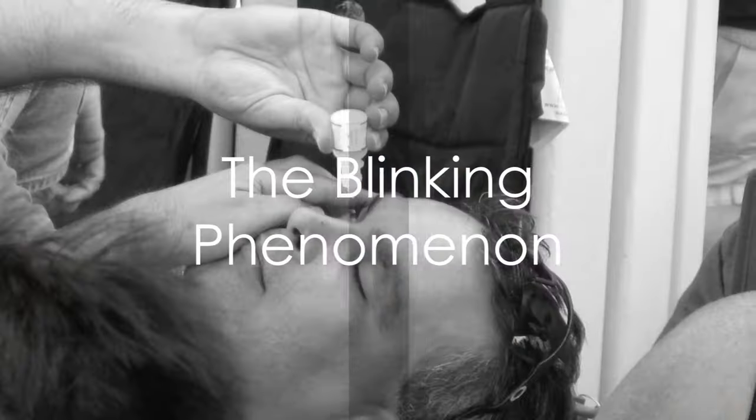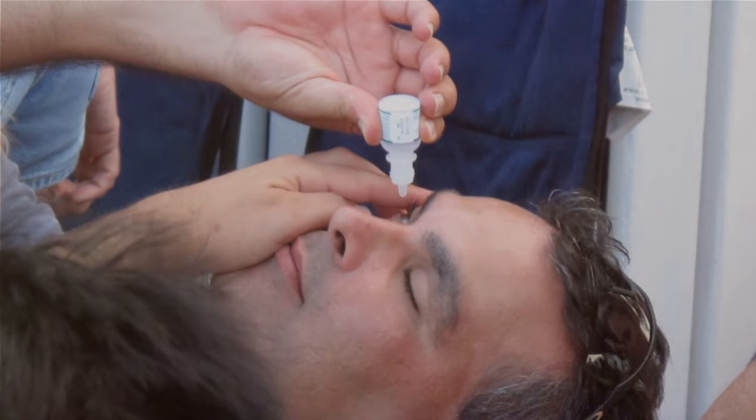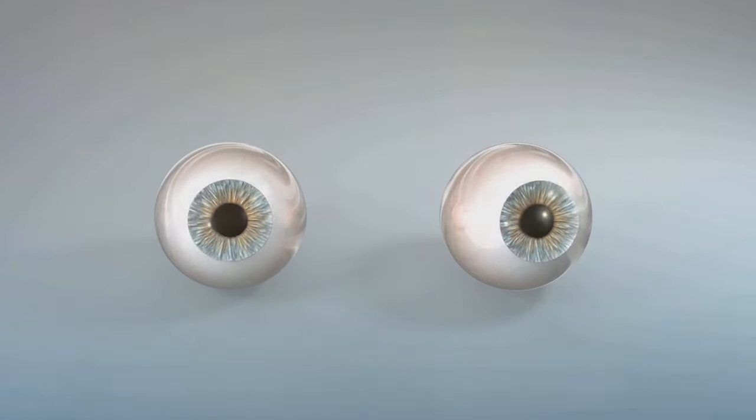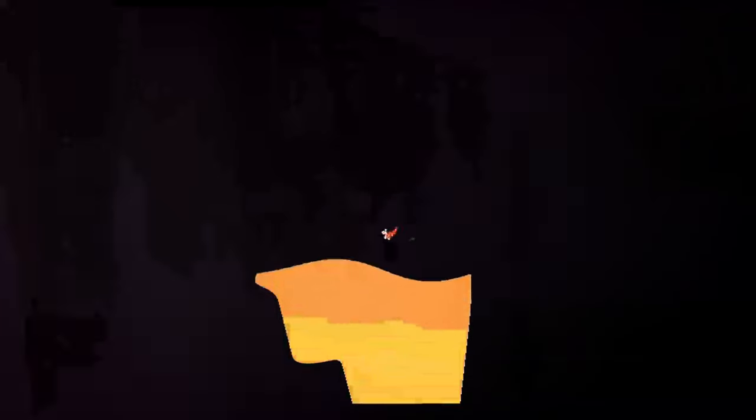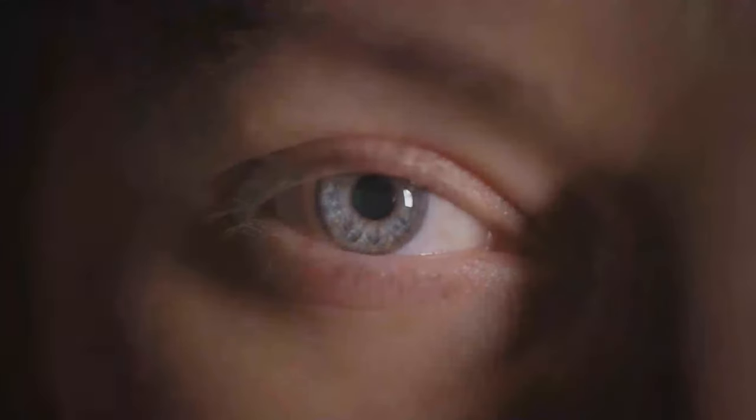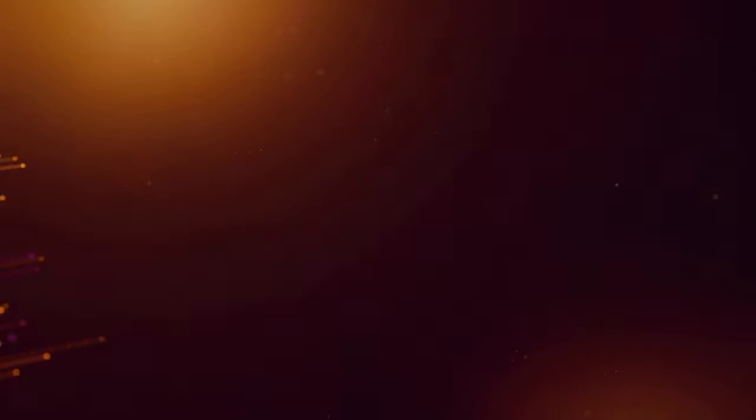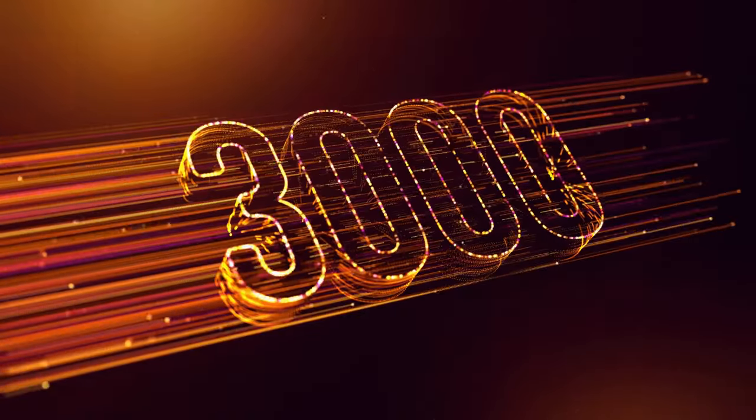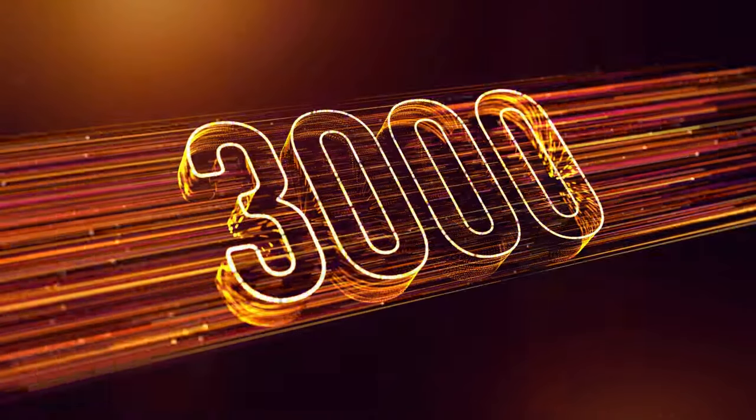Ever considered why we blink? Most of us would say it's to keep our eyes moist. And yes, you're not wrong, but there's more to it. Blinking is like a mini spa session for your brain. On average, we blink about 15 to 20 times per minute. That's around 28,000 times a day. It's almost like our eyes are on a constant marathon. Each blink lasts about just a tenth of a second, which means our brain is taking a microbreak nearly 3,000 times an hour. That's a lot of rest time.